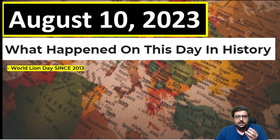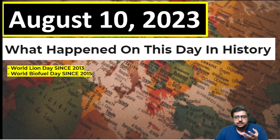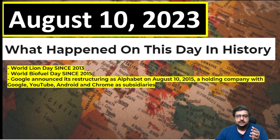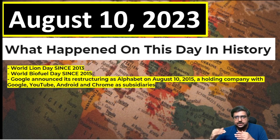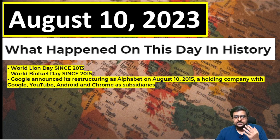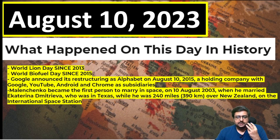For example, on August 10th: World Lion Day, which we have been observing since 2013. World Biofuel Day, observed since 2015 - this was India's initiative, suggested by our Petroleum Minister to the world, which makes it important from India's perspective. Also, Google - which has YouTube, Android, Chrome, and many subsidiaries - decided to create a parent company named Alphabet. Alphabet company was formed on August 10th, 2015, as a holding company, with all the subsidiaries under it.